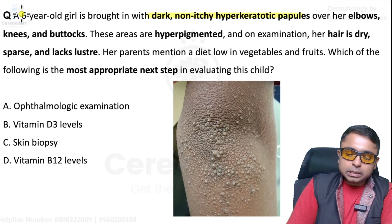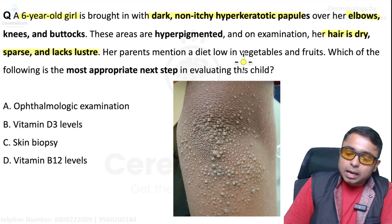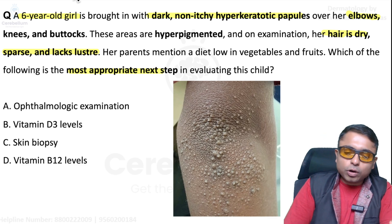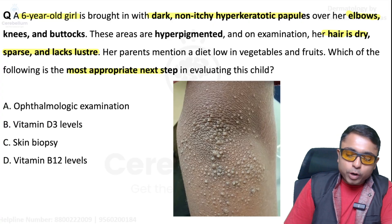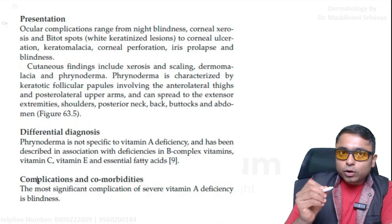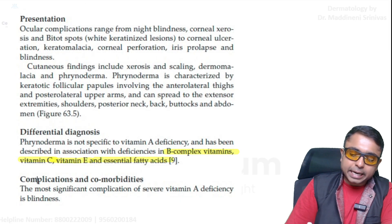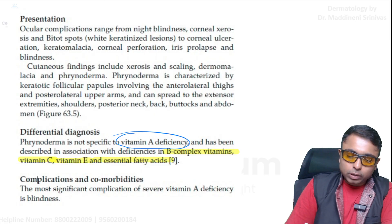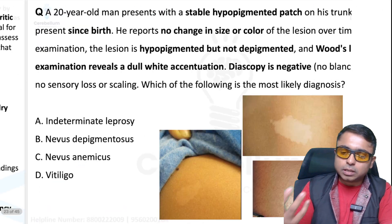Next: dark non-itchy hyperkeratotic papules in a child with elbows as the predominant site, plus signs of vitamin deficiency. Most appropriate next step — you should diagnose this as phrynoderma, commonly due to vitamin A deficiency, so ophthalmic examination is very important. Remember, phrynoderma is not just due to vitamin A deficiency — it can also be due to B complex, vitamin C, vitamin E, and essential fatty acids, but vitamin A deficiency is most important. Complications of severe vitamin A deficiency include blindness and Bitot's spots/xerosis.